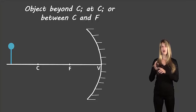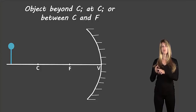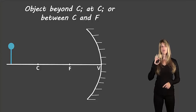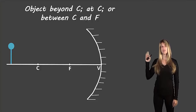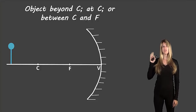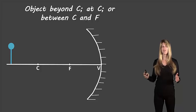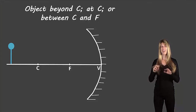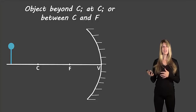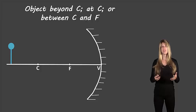For three locations — object beyond C, object at C, and object between C and F — we use the same rules, so I'm only going to draw one diagram, but it applies to all three. I can't draw these by hand the way I did with plane mirrors because it's too messy with a tablet. So I'm going to use an animation to show how you would draw those lines, but it'll be the exact same as drawing them by hand.